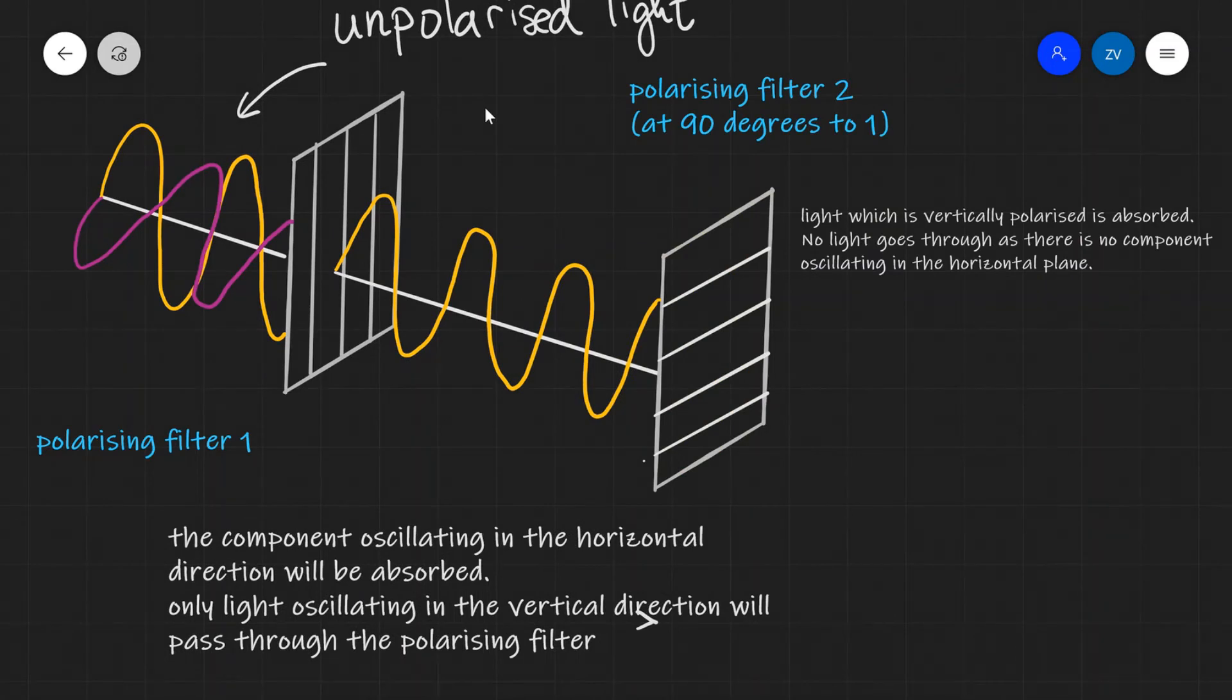Okay guys, now let's add a second polarizing filter. And let's make sure that we rotate the second polarizing filter at 90 degrees to the first one.